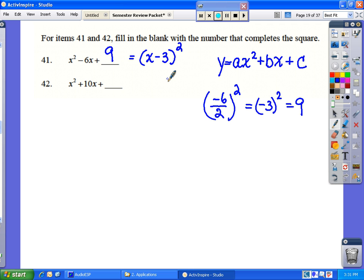In number 42, following the same procedure, we take the b value which is 10, divide it by 2, which is the same thing as multiplying by 1 half. Sometimes we say it that way, and we're going to square it. 10 divided by 2 is 5 squared is 25, and that is the c value that completes the square.